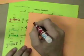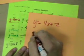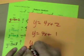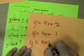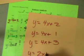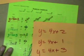We had y equals 4x plus 2, y equals 4x plus 1, y equals 4x plus 3, and y equals 2x plus 3. Those were all those rules and here were their different patterns.